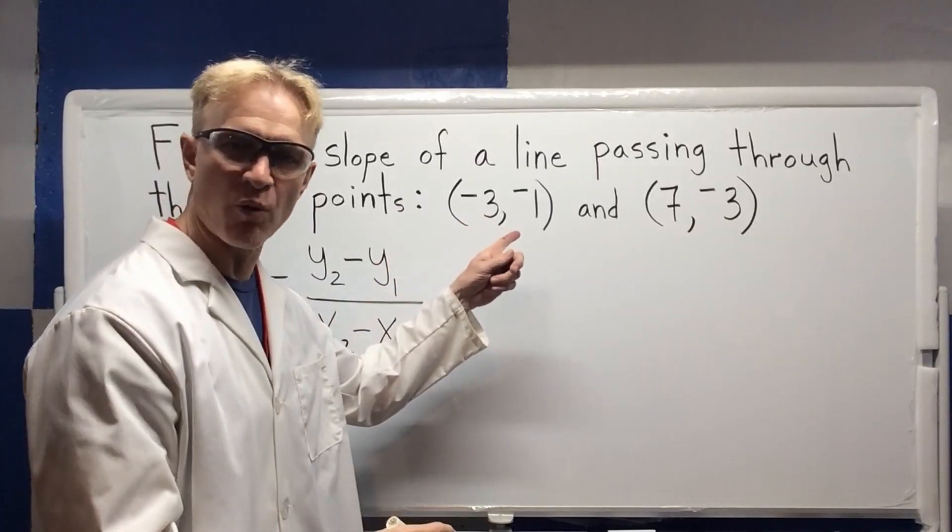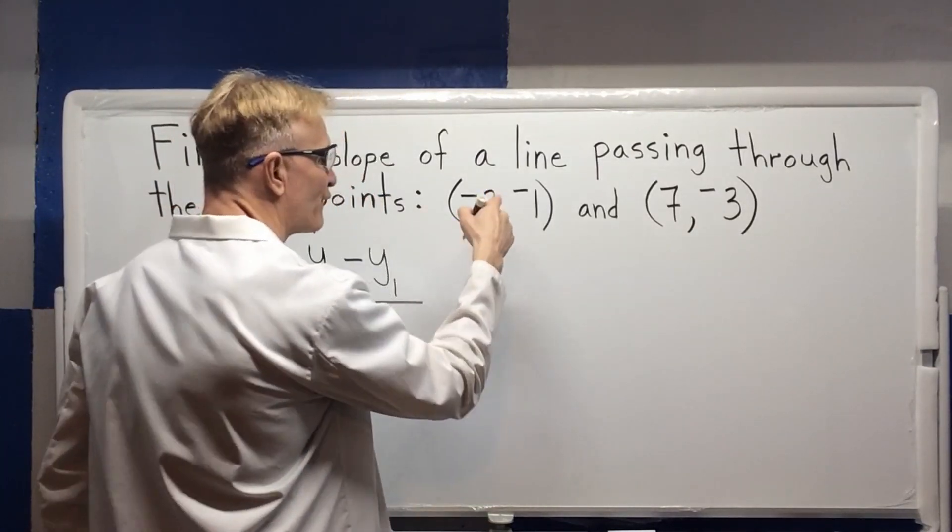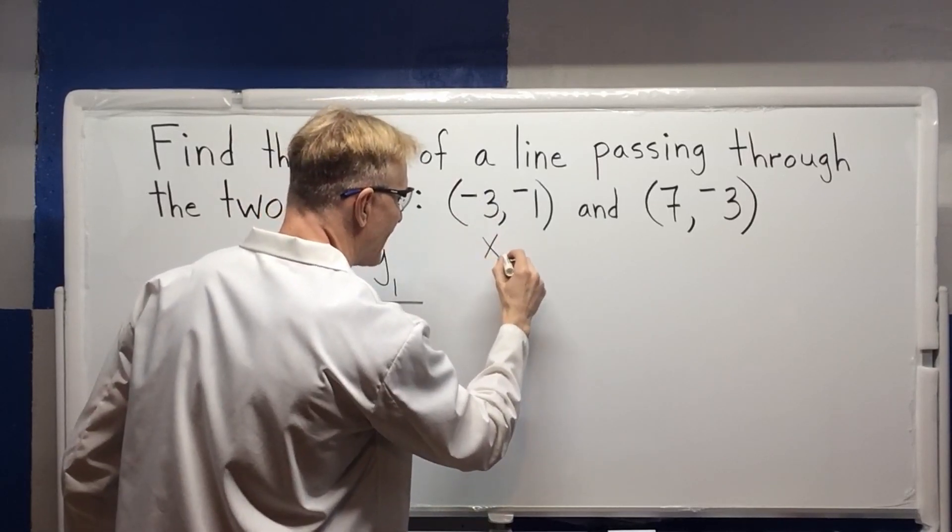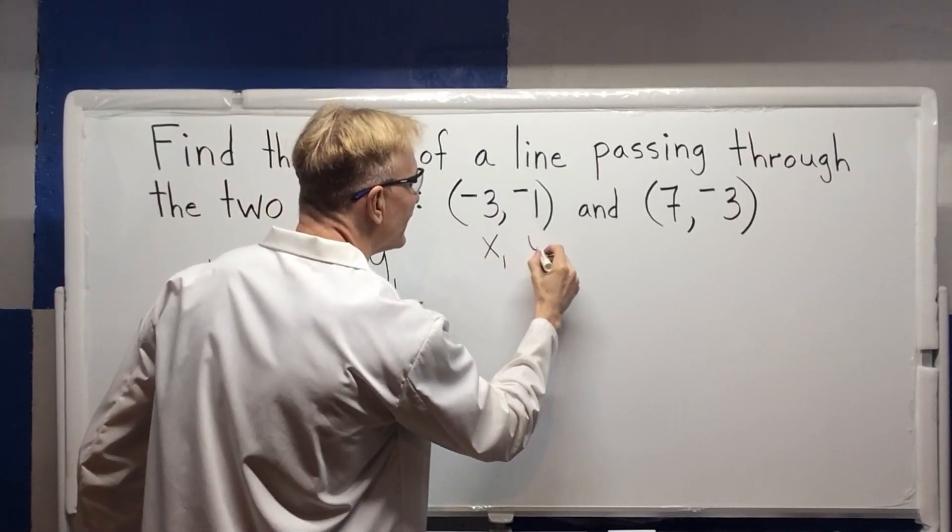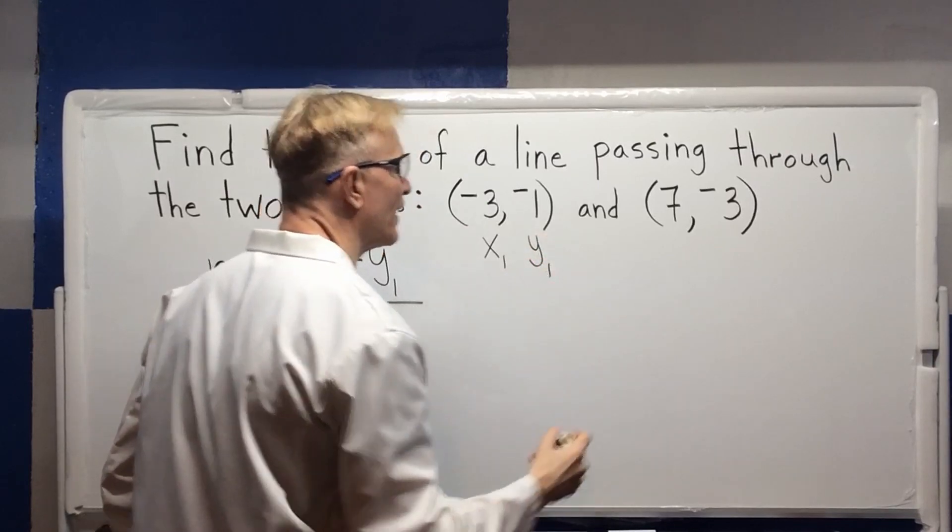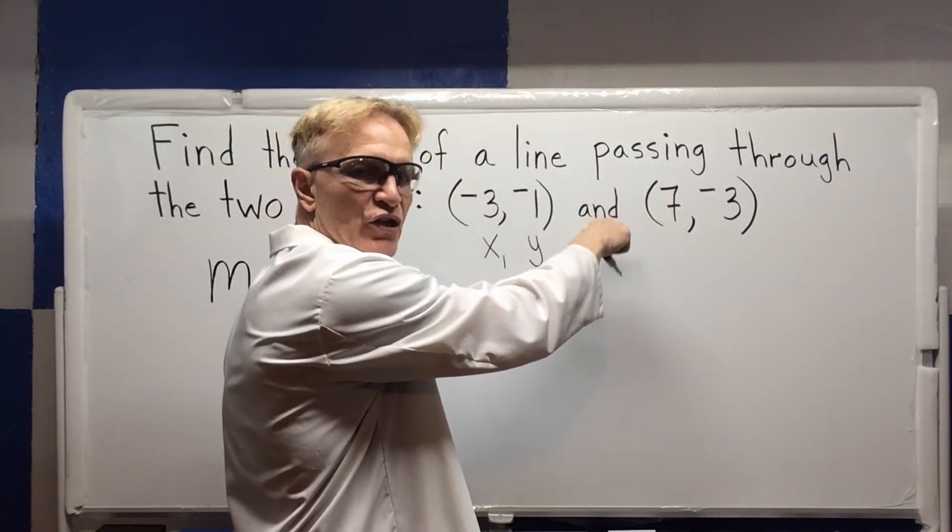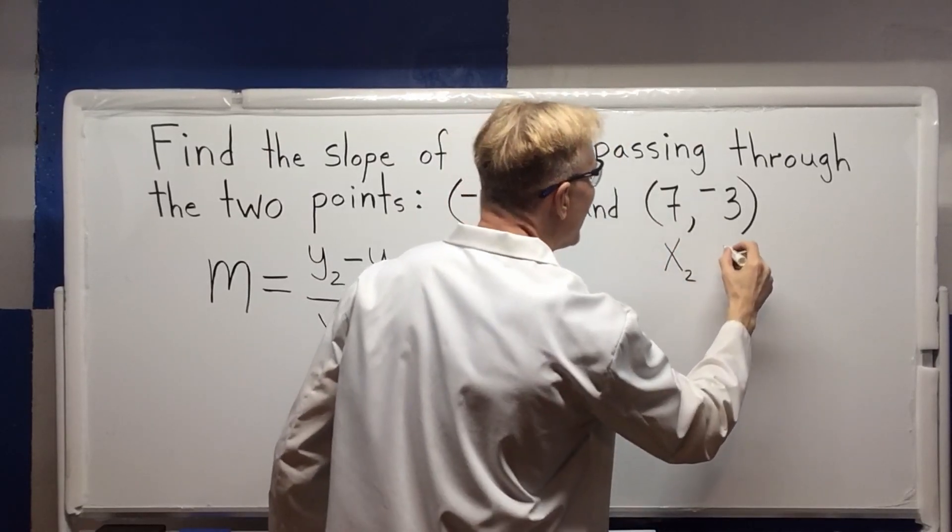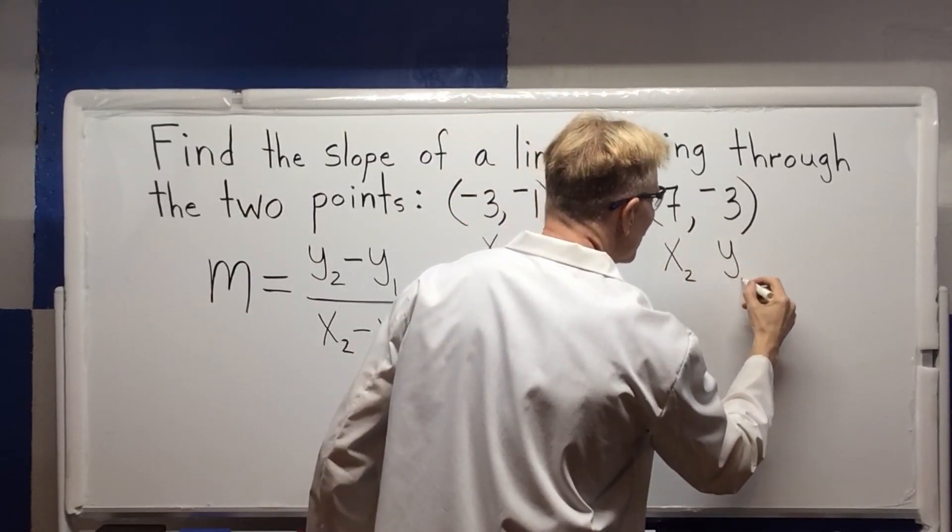Now I need to label my points. I label the first point with one subscript. So x sub 1, x comes before y, x sub 1. The negative one is going to be y sub 1. The second point has 2 for a subscript. So I have an x sub 2, x before y, and y sub 2.